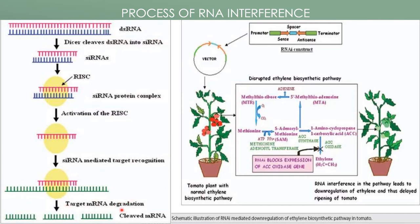This same process was utilized in the ethylene biosynthesis pathway. RNA interference blocked the expression of ACC oxidase, which is involved in the final step of ethylene biosynthesis. Since ACC oxidase was blocked, ethylene synthesis was down-regulated. Thus, ethylene production in tomato fruit was delayed, leading to a delay in ripening of the fruit.